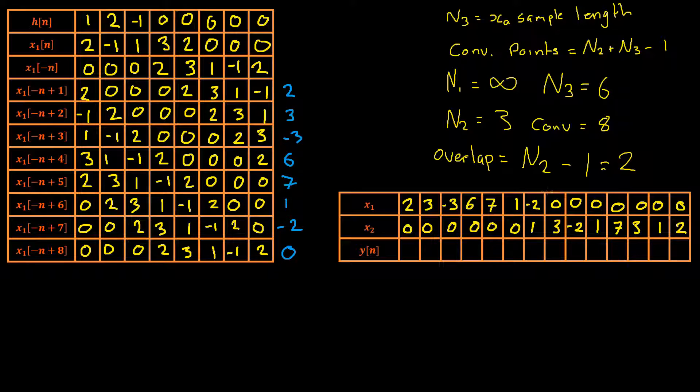Notice that there's an overlap of two samples between the two signals as the last sample of our x1 was a zero and our first sample of our x2 was a one.